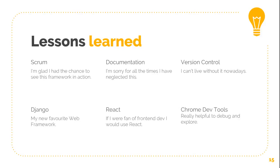Documentation: I never had to rely so much on documentation before — I'm sorry for all the times I neglected this. Version control: I always found it extremely important and was already quite familiar with it, but I still learned one or two very interesting things. Django: simply my new favorite web framework. React: I wasn't a big fan of front-end development before, and I still am not — but if I were, I would use React. Chrome DevTools: I was blind but now I see. It was a very useful lesson — especially helpful to debug and explore the Geppetto front-end.